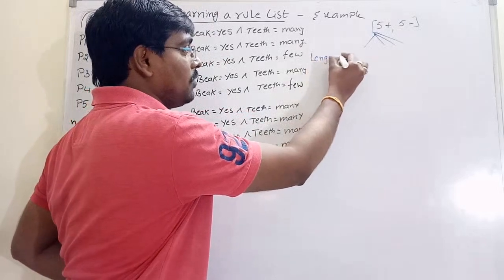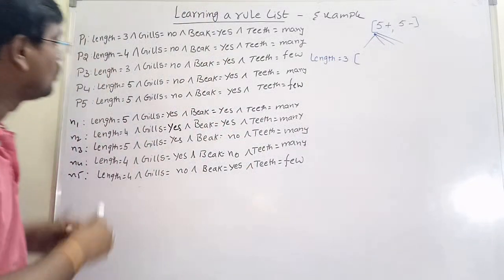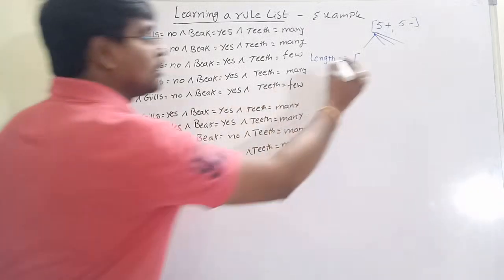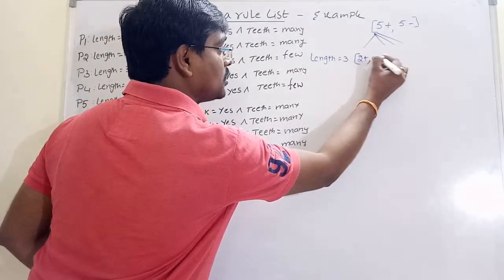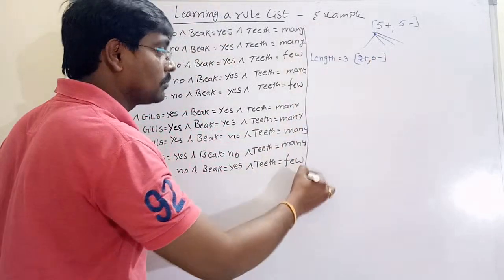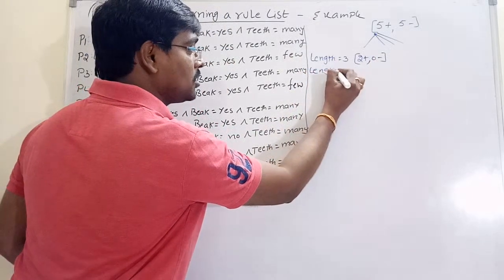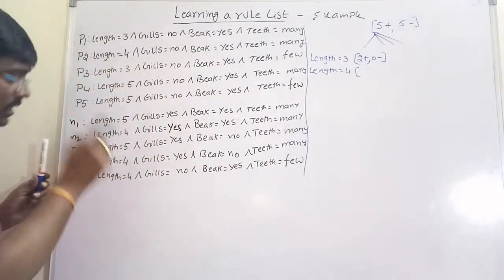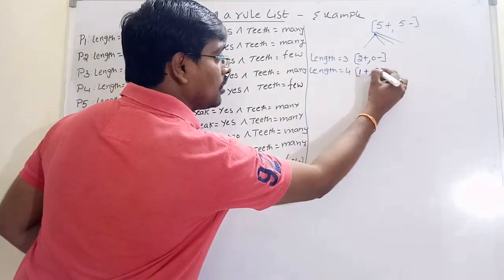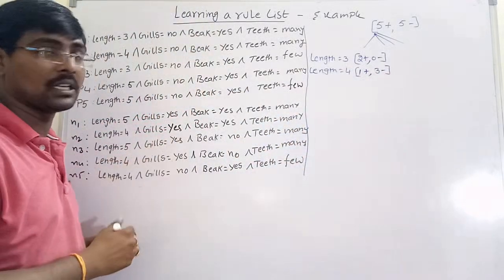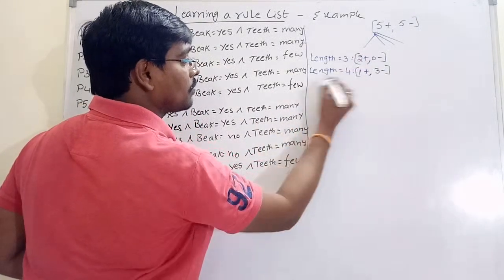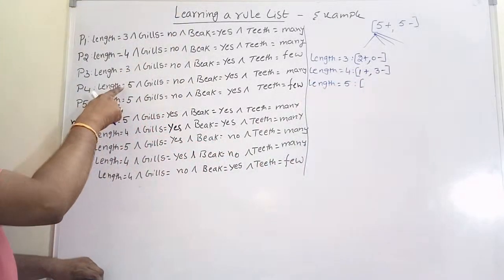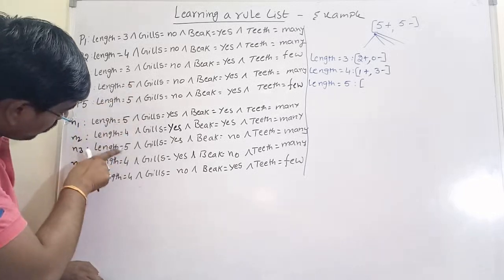If length is equal to 3: two positives and zero negatives. If length is equal to 4: one positive and three negatives. If length is equal to 5: two positives and two negatives.